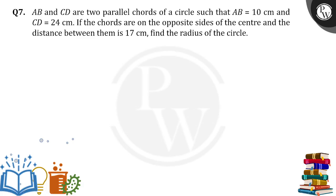Hello everyone, AB and CD are two parallel chords of a circle such that AB is equal to 10 cm and CD is equal to 24 cm. If the chords are on the opposite sides of the center and the distance between them is 17 cm, find the radius of the circle.